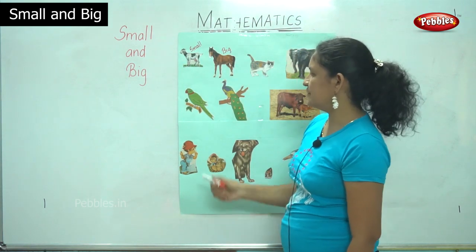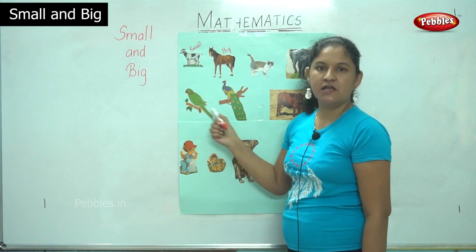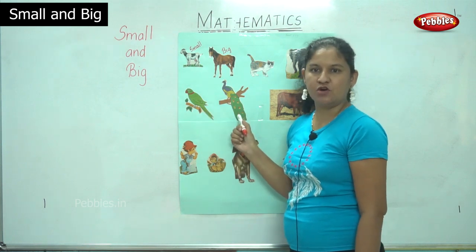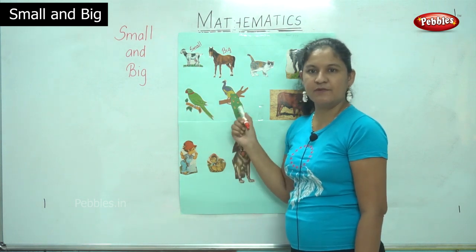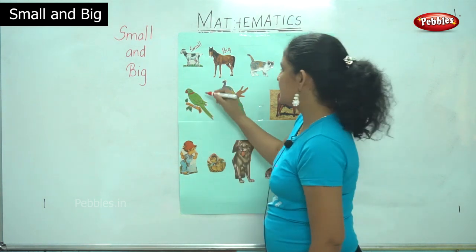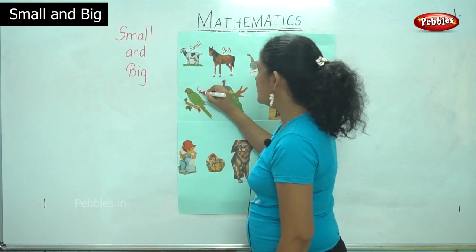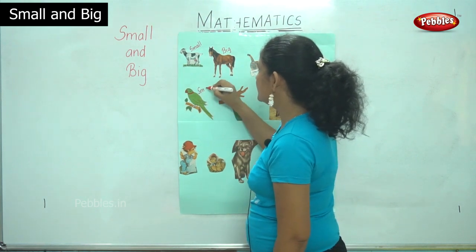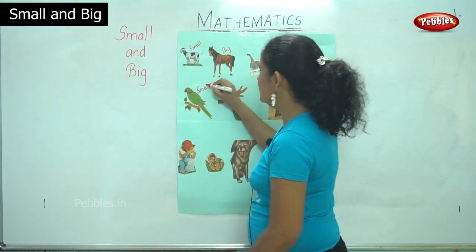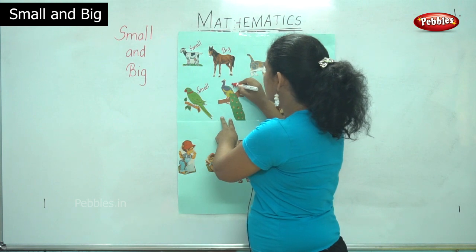The next two pictures show a parrot and a peacock. When we compare both these birds, the parrot is small and the peacock is big.